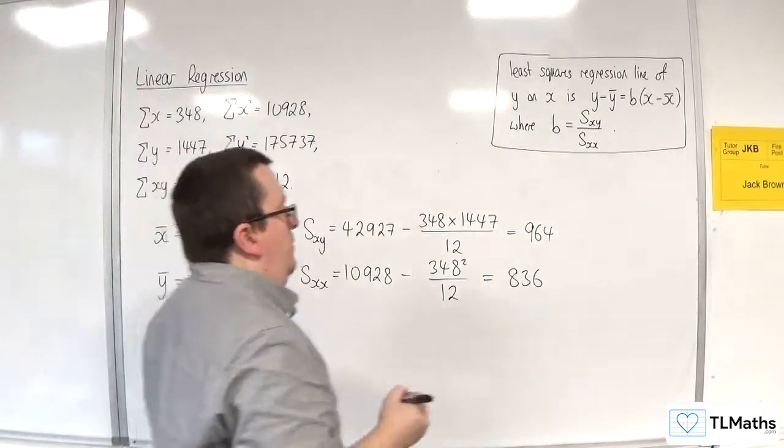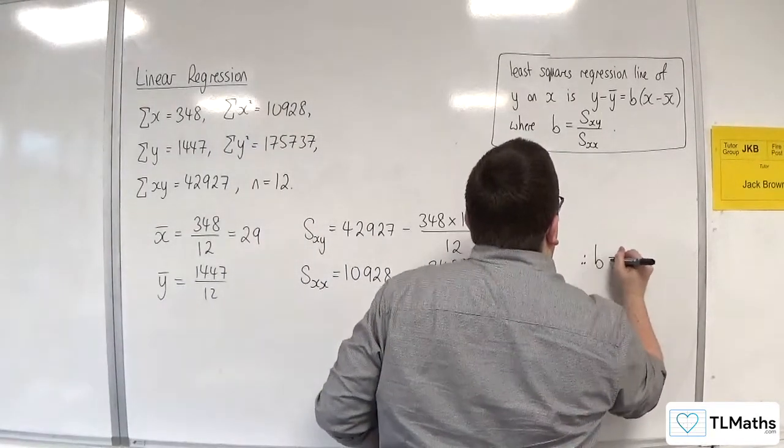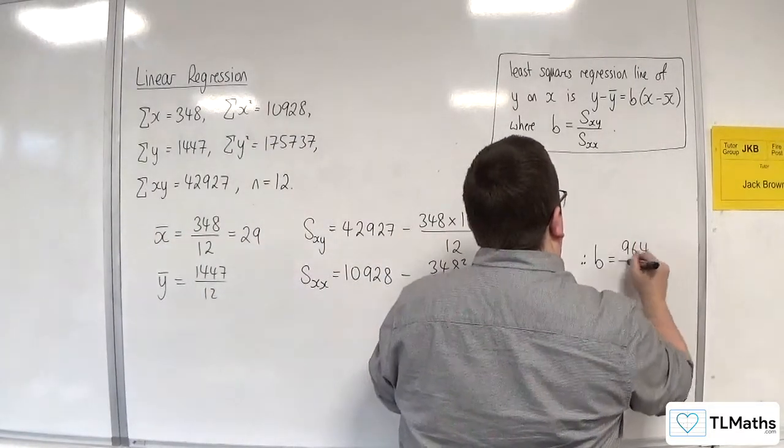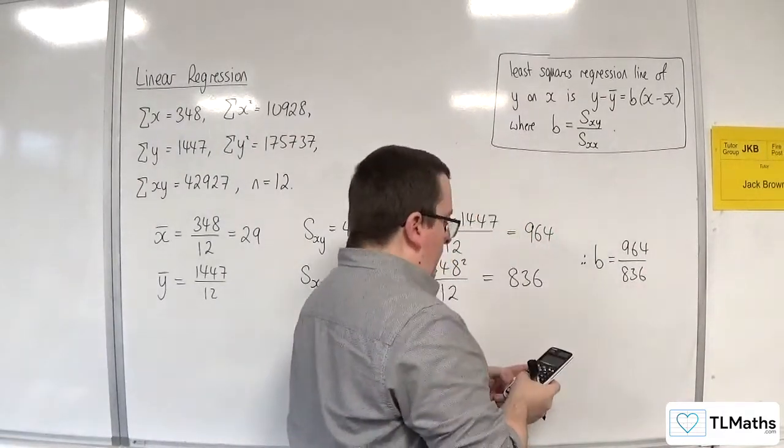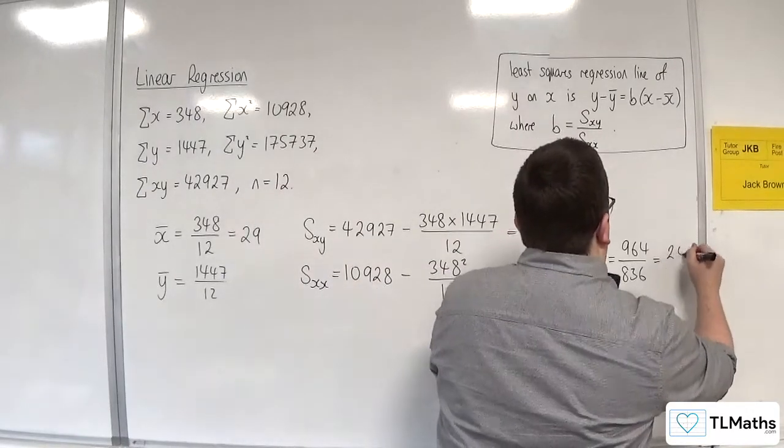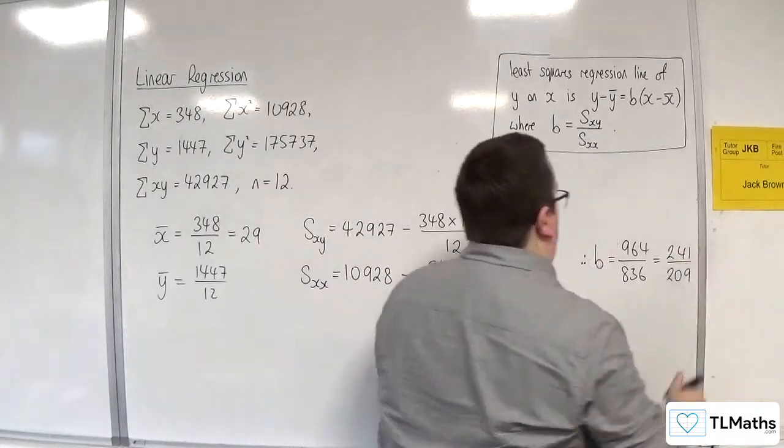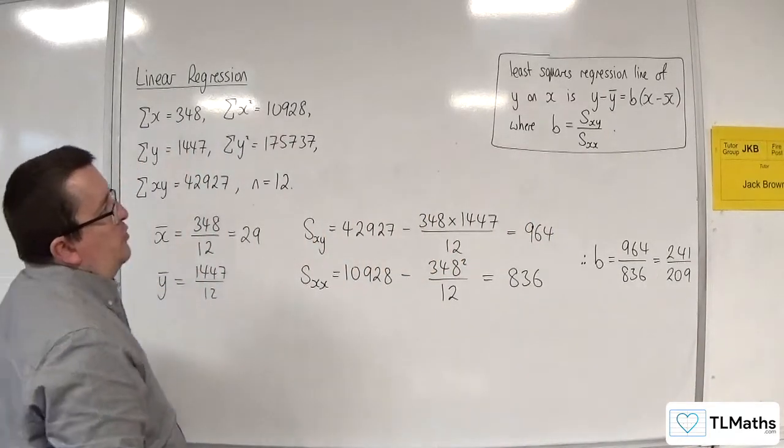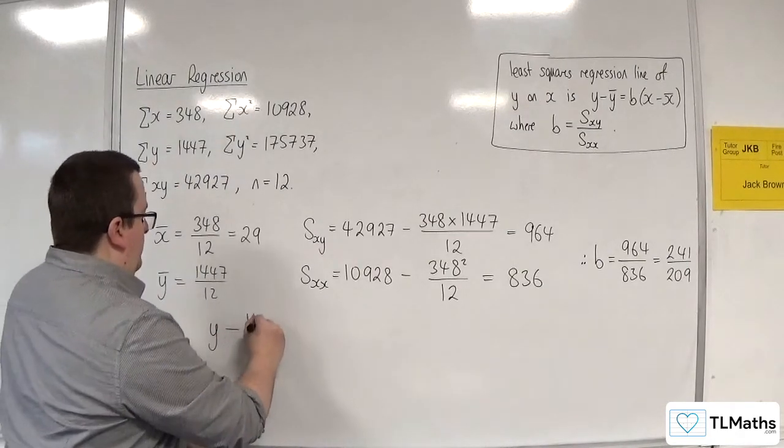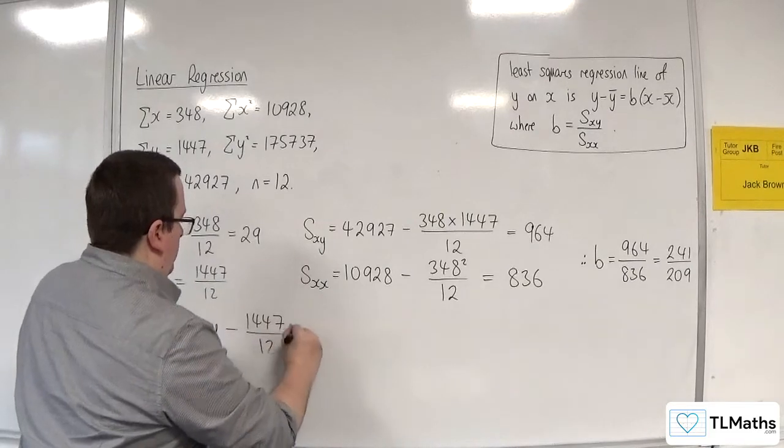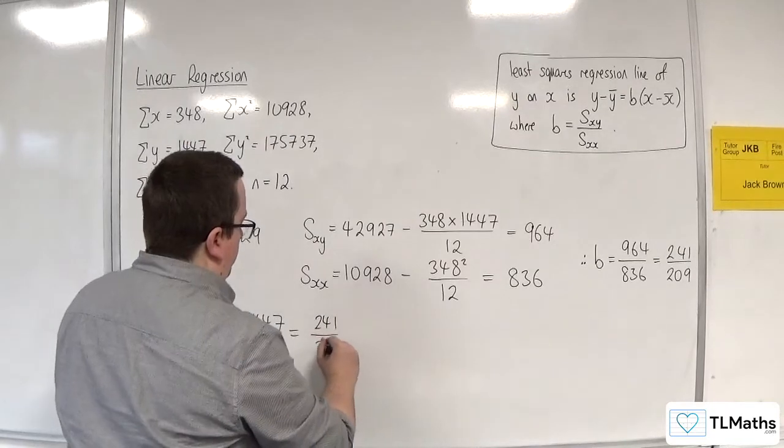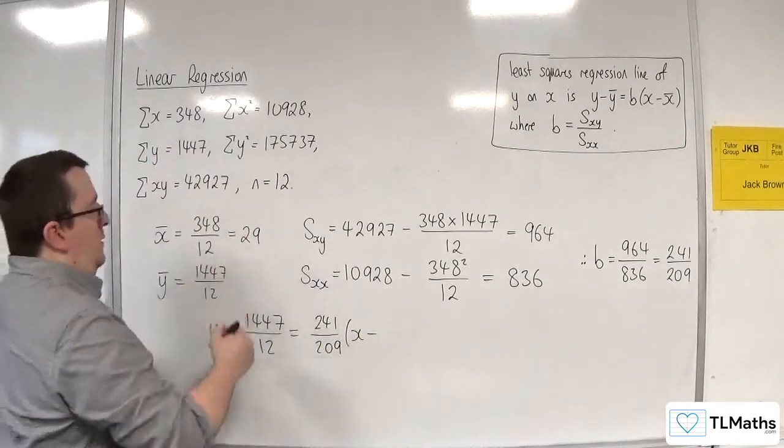So therefore, b is going to be 964 over 836, which simplifies to 241 over 209. So the least squares regression line will be y take away y bar is equal to b, 241 over 209, x take away x bar, which is 29.